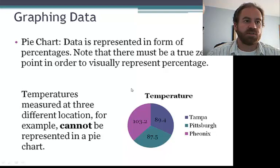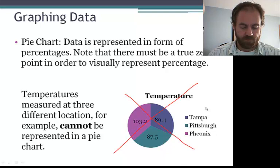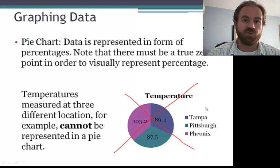And students and even professional researchers and reports frequently misuse graphs. And here's an example of such. So we really shouldn't be using a pie chart to represent relative temperatures in different parts of the country. So this would be a bad example of using a pie chart.